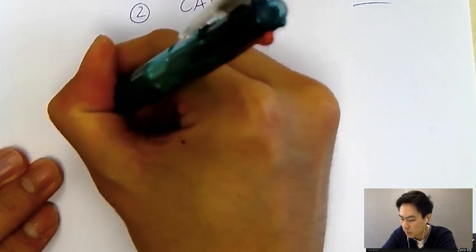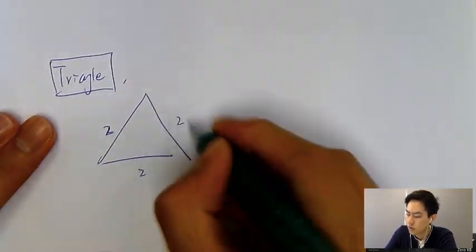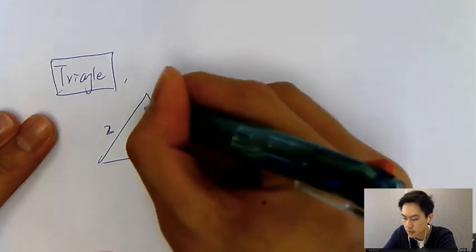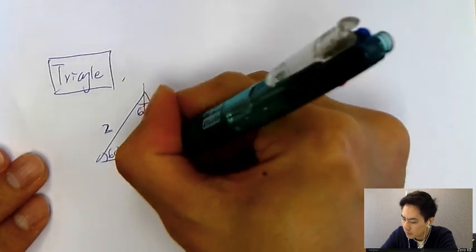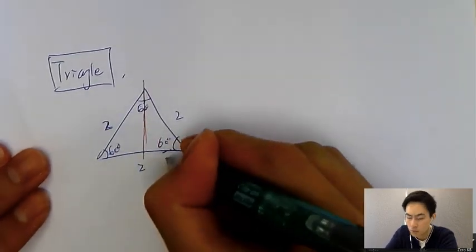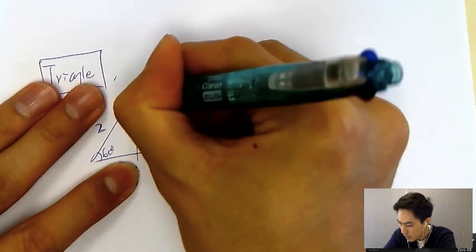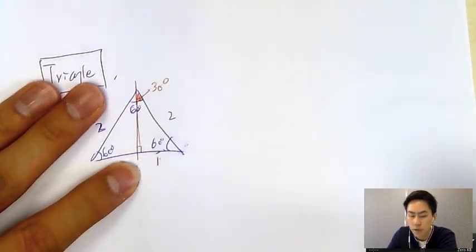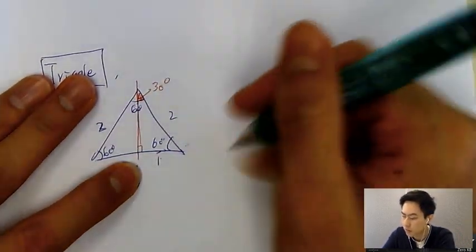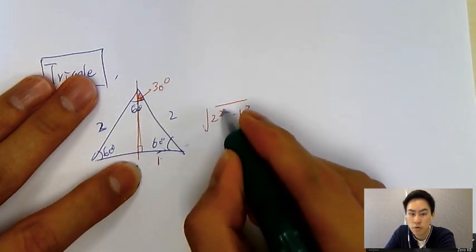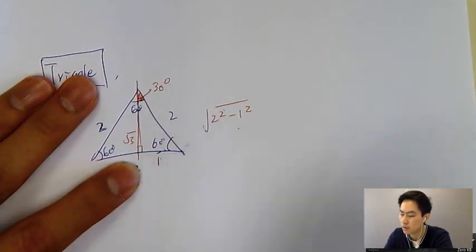The first triangle is the 2-2-2 equilateral triangle, where all angles are 60°. If I draw a line down the middle, it splits the base into half, giving 1 on each side. That middle line is 90°, leaving 30° at the top. The remaining side is calculated using Pythagoras: √(2² − 1²) = √3.